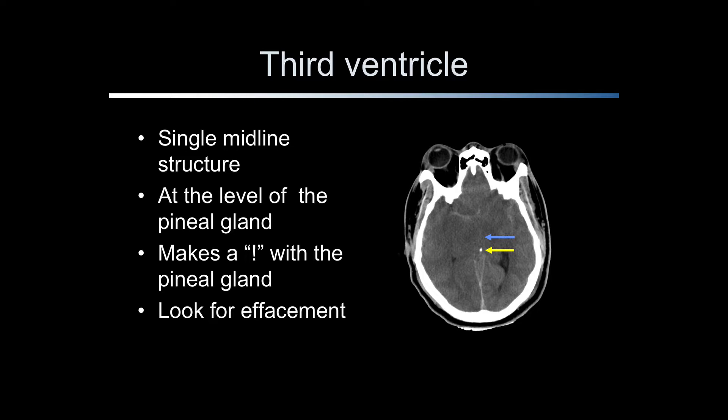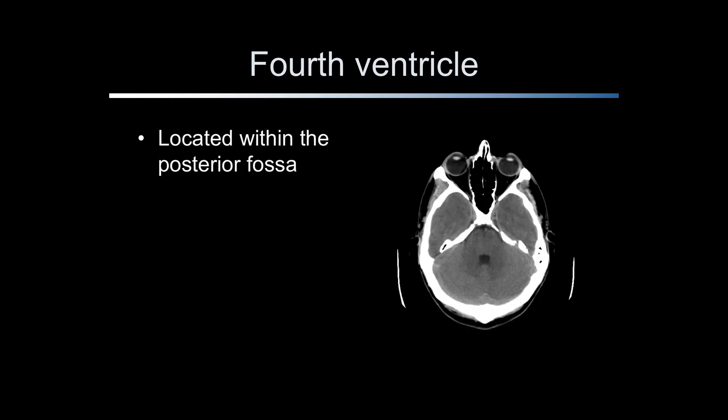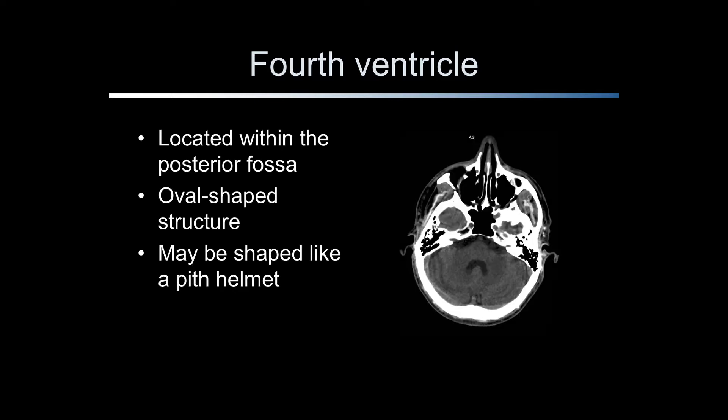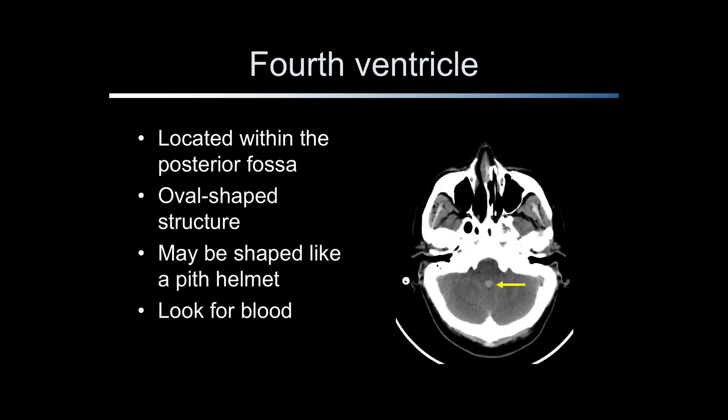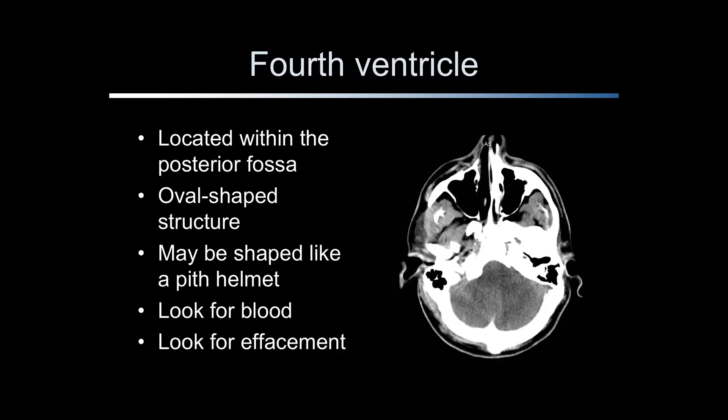The pineal gland, indicated by the yellow arrow, is typically just posterior to the third ventricle. The blue area points to the location where the third ventricle should be seen — it is effaced on this CT scan. The fourth ventricle is located below the tentorium in the posterior fossa. It is typically oval-shaped or may be shaped like a pith helmet. Blood in the fourth ventricle is rarely seen but is shown here by the arrow. Compression or effacement of the fourth ventricle occurs infrequently but is seen here as a result of severe trauma.